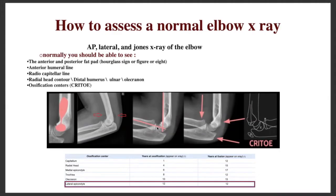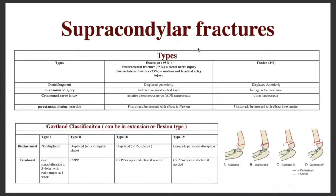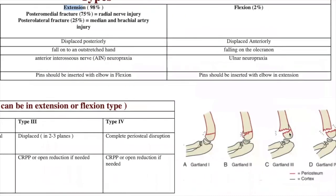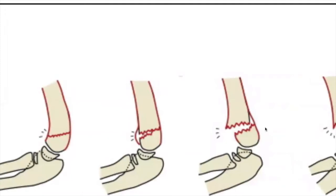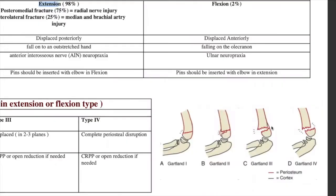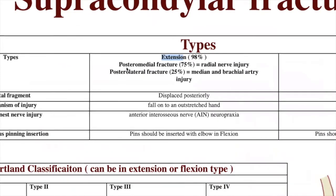The first and most common elbow fracture is the supracondylar fracture. It has two types depending on mechanism: the extension type — most common — where the distal fragment is displaced posteriorly, either posteromedial or posterolateral. Posteromedial displacement is more susceptible to radial nerve injury, while posterolateral displacement is more susceptible to injury of the median nerve and brachial artery.